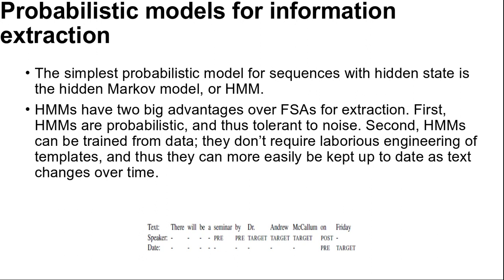The next topic is probabilistic models for information extraction. When information extraction must be attempted from noisy or varied input, simple finite state approaches fare poorly — it is too hard to get all the rules and their priorities right. It is better to use a probabilistic model rather than a rule-based model. The simplest probabilistic model for sequences with hidden state is the Hidden Markov Model, or HMM. To apply HMM to information extraction, we can either build one big HMM for all the attributes or build a separate HMM for each attribute.